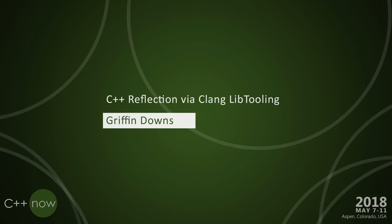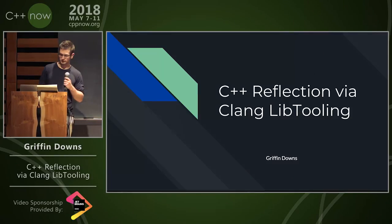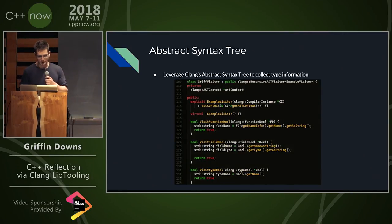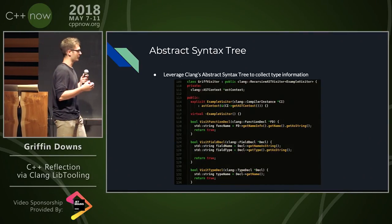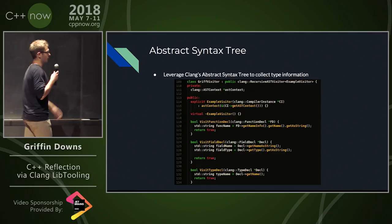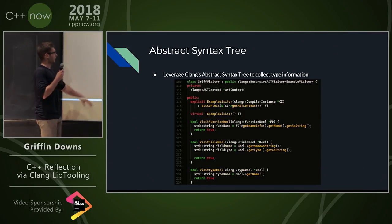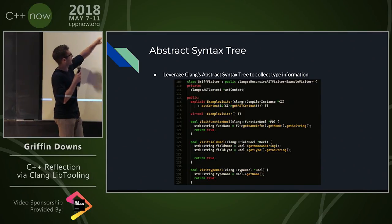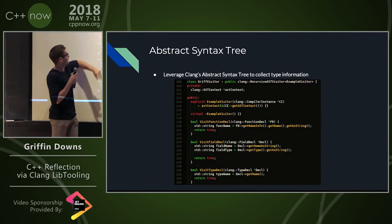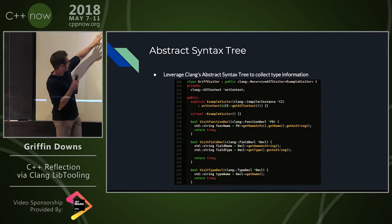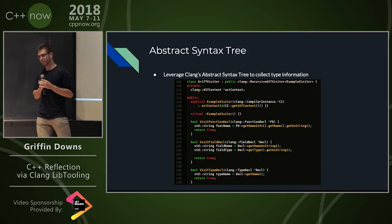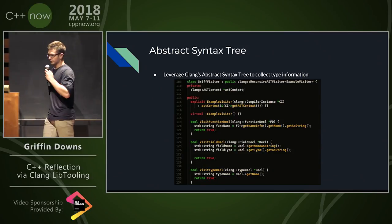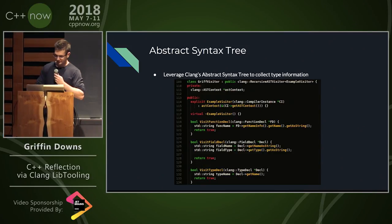C++ reflection via Clang libtooling. Clang has this cool thing — it has an abstract syntax tree. What you can do is inherit from it and traverse the tree however you like. How can we use this?